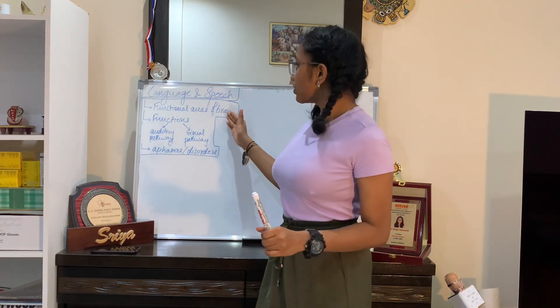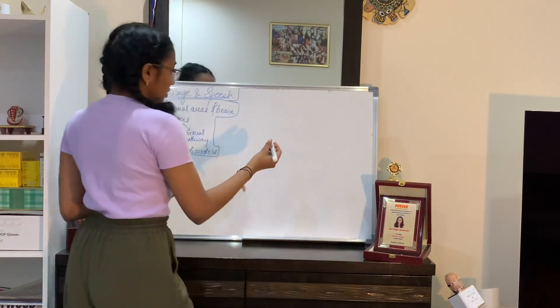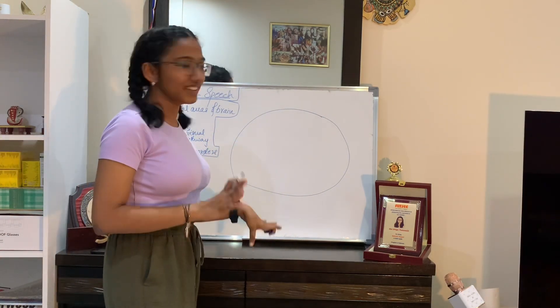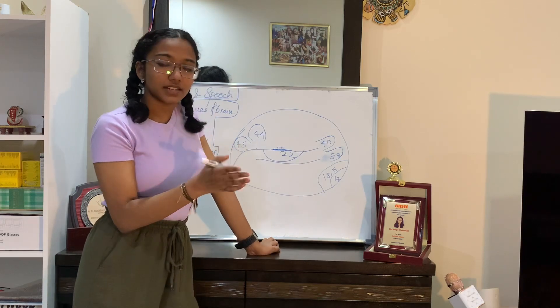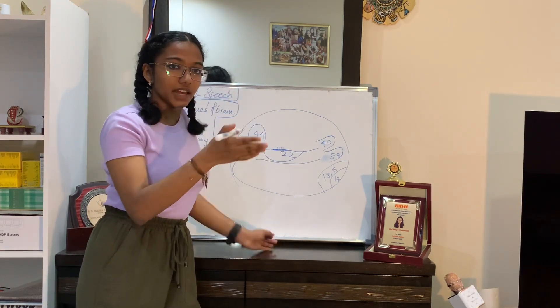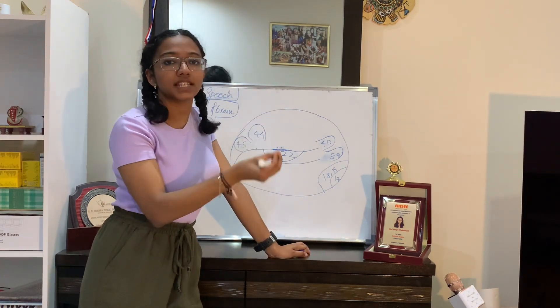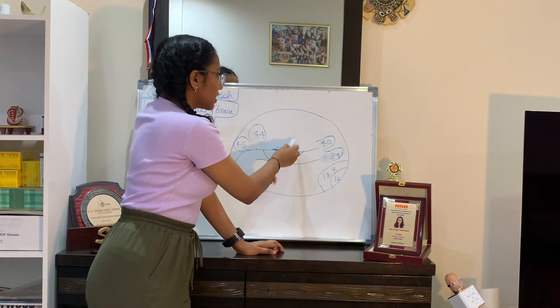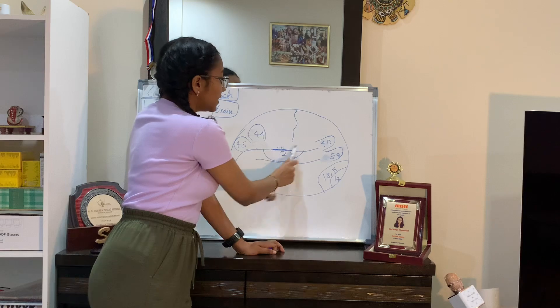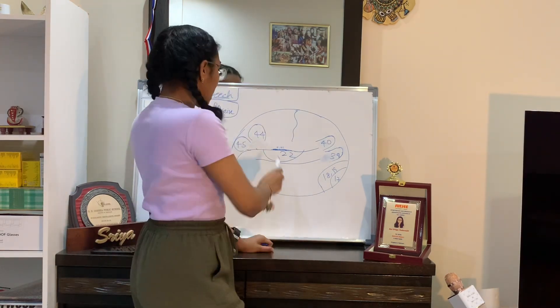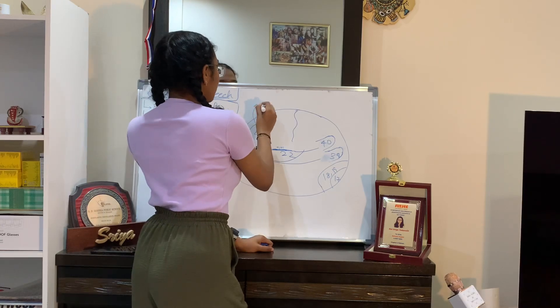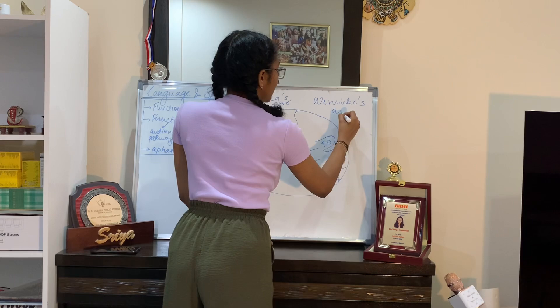I've broken down the subtopics for today. The first one is the functional areas of the brain. Before we start on how our brain processes language, let us see which parts of the brain are involved. I've drawn a rudimentary brain here. The most important feature is the lateral sulcus. Our brain has sulci and gyri — depressions and elevations. On either side of the lateral sulcus are two important speech and language areas: Broca's motor area and Wernicke's area, which is the sensory area.